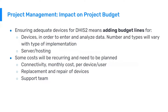How does this impact a project budget? Ensuring adequate devices for DHIS2 means adding budget lines for devices, server costs, and hosting costs. Some costs will be recurring and need to be planned for — connectivity, for example, is a monthly cost per device or per user. Replacement and repair of devices needs to be budgeted for, along with an ongoing support team that is knowledgeable about what they are supporting and available for as long as the system is in use.